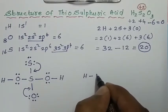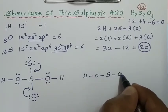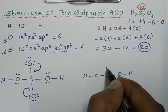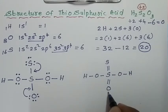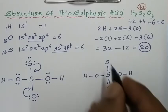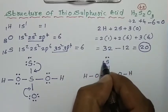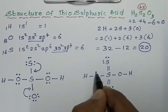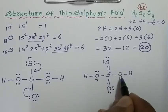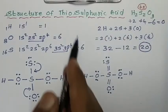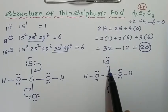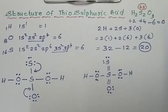In the final structure: hydrogen connects to oxygen, which connects to sulfur. There is one OH group, a double bond to sulfur, a double bond to oxygen with two lone pairs, and another oxygen with two single bonds and two lone pairs. This is the structure of thiosulfuric acid. Remember, there is one S double bond S in thiosulfuric acid. Thank you for watching.